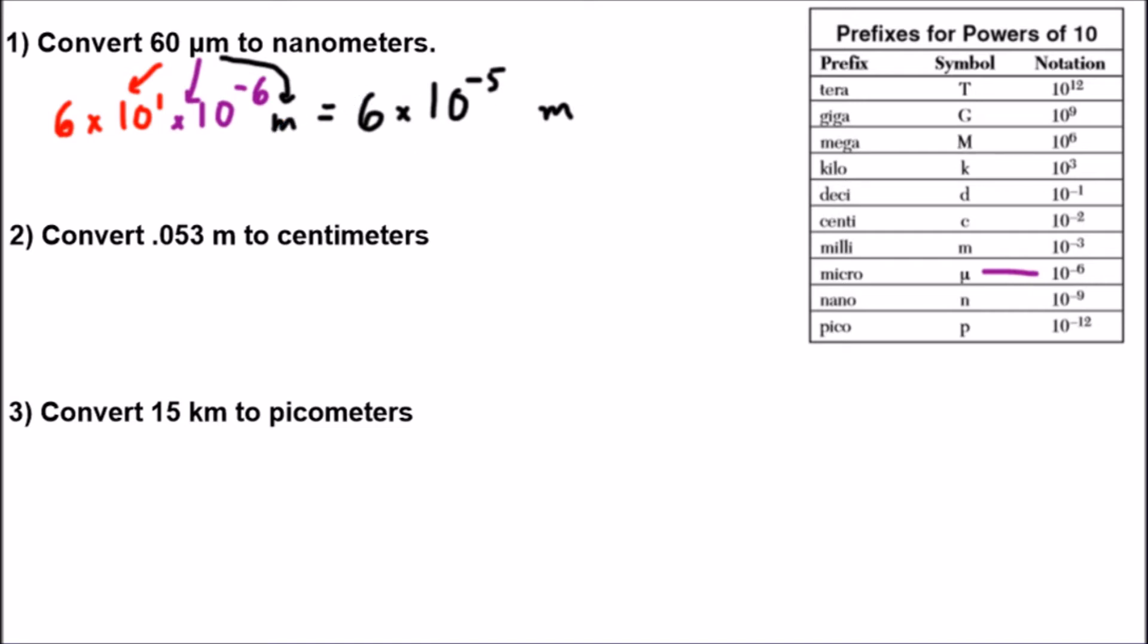But now we wanted to convert to nanometers. But I can't just introduce this letter N here. If I introduce the letter N, I have to divide by the appropriate power of 10 that's attached to it. So N corresponds to 10 to the negative 9. So I'm going to write 10 to the negative 9 in the denominator here. So I have N over 10 to the negative 9.